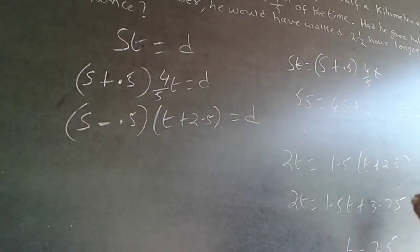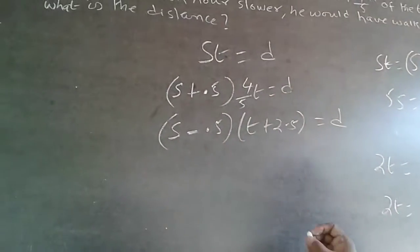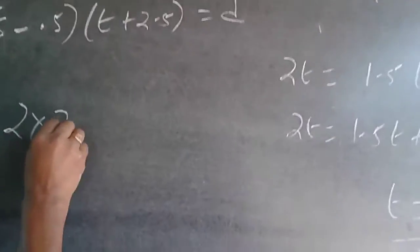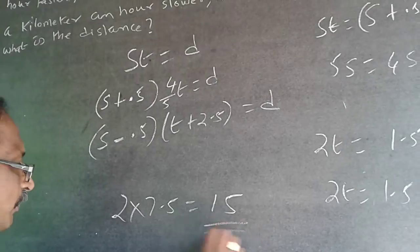Now I know what is T, I know what is S. So distance, ST will be equal to D. 2 into 7.5 will be equal to 15. The answer is 15.